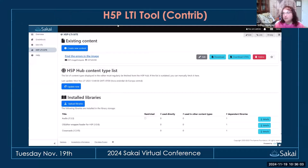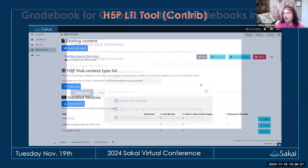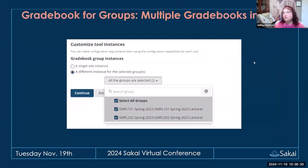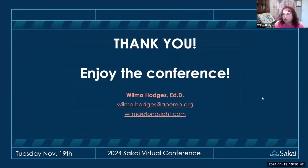There is also an H5P LTI tool — a contrib tool, not part of core, but available to put in H5P content. And there is now a gradebook for groups. If you have multiple groups in a site and want a gradebook for each, you can now have multiple gradebooks in a course. That is the quick overview of the majority of new stuff in Sakai 25.